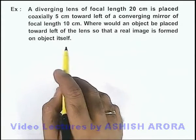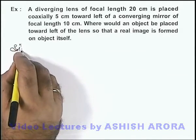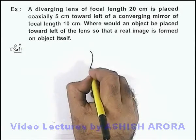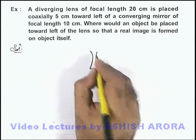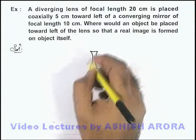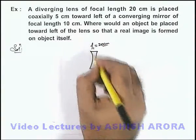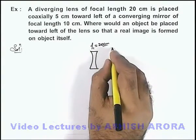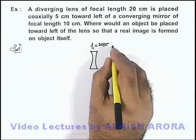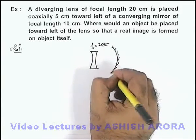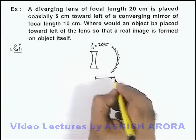Here if we first draw the situation, we are given that a diverging lens which has a focal length f1, say 20 centimeters, is placed on the left side of a converging mirror, that is a concave mirror placed at a distance of 5 centimeters from the lens.